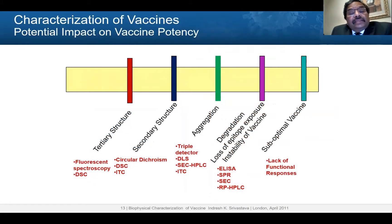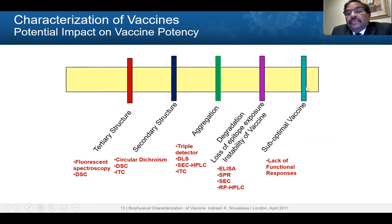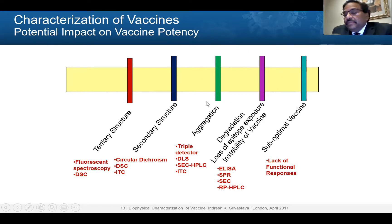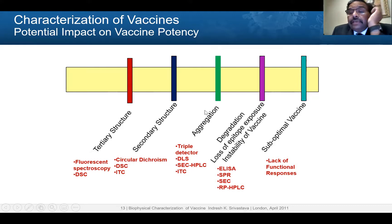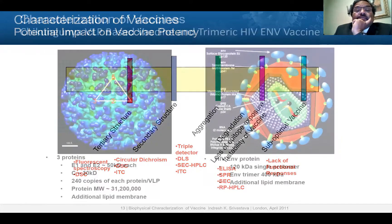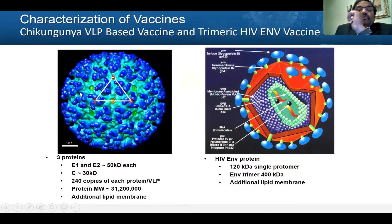Changes in the tertiary structure, secondary structure, aggregation, and degradation will all compromise the vaccine potency. Therefore, monitoring all these aspects through different characterization methods is critical for successful vaccine production and manufacturing.